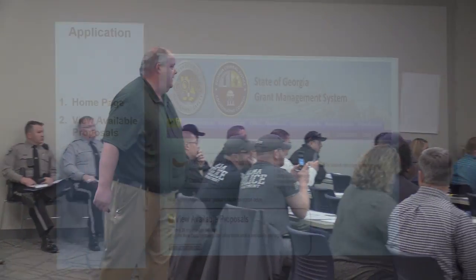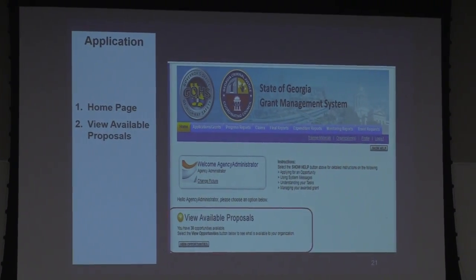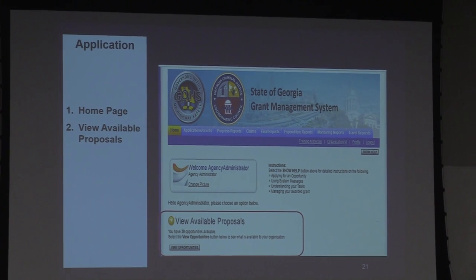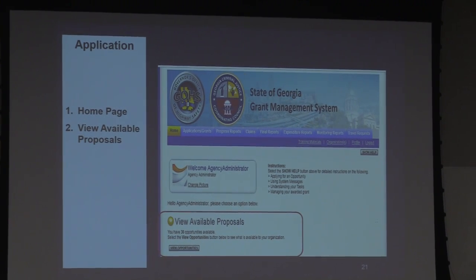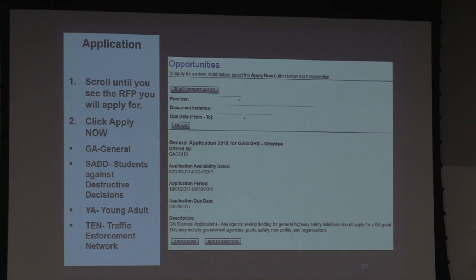We're going to go here to the application page. Once you log in, you'll be at the home page. You're going to review available proposals. Scroll until you see the RFP you want to apply for. Click Apply Now.